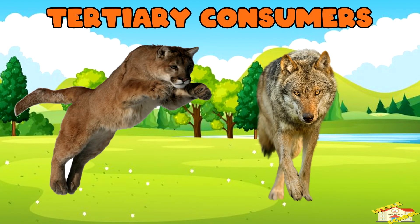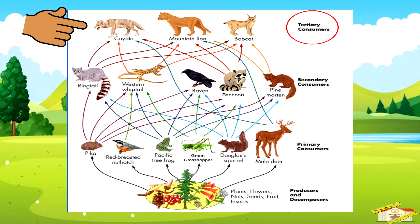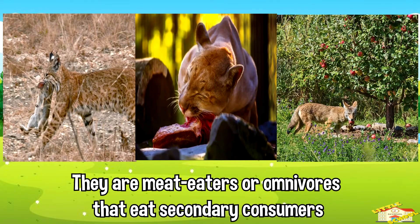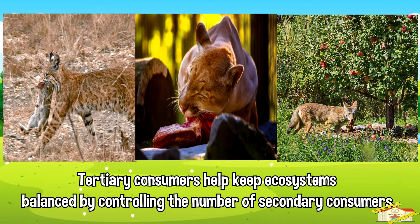Tertiary consumers are animals that occupy the fourth level in a food web. They are meat-eaters or omnivores that eat secondary consumers. Tertiary consumers help keep ecosystems balanced by controlling the number of secondary consumers, which affects the population of lower-level organisms.